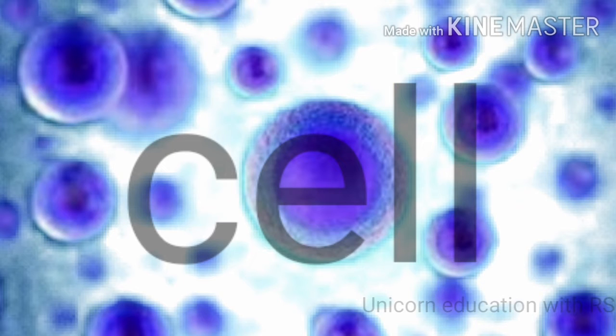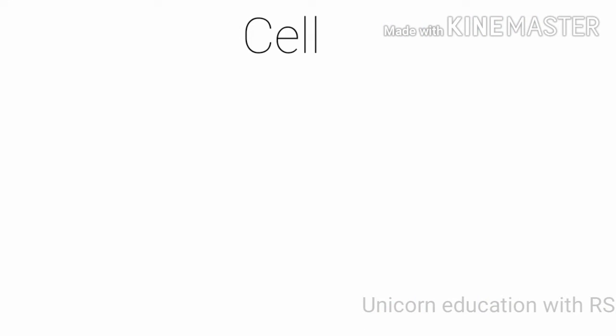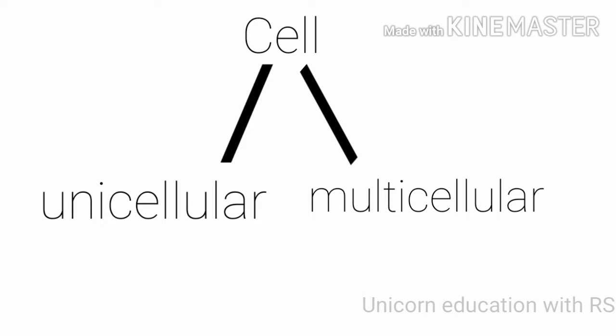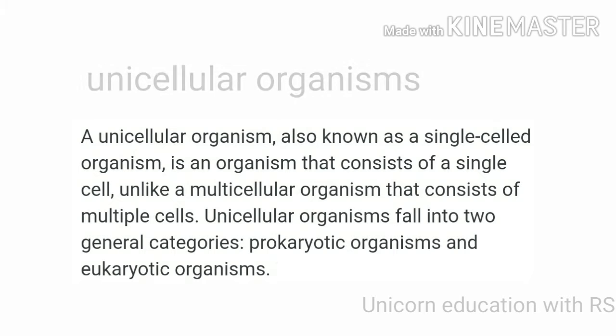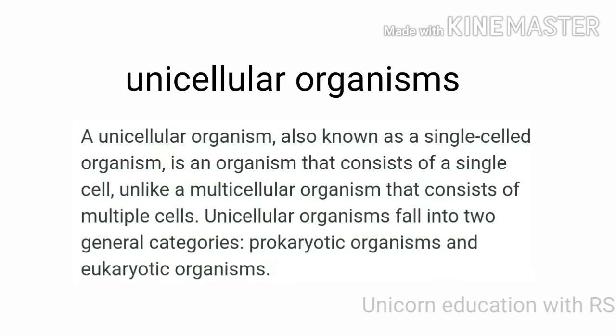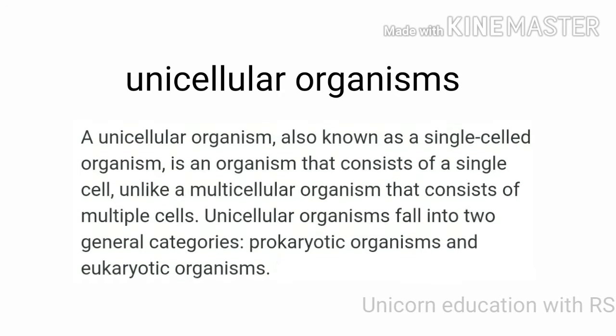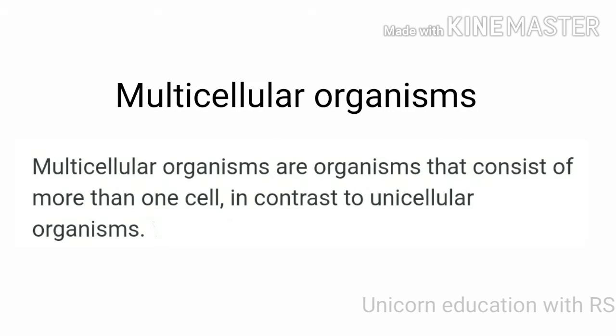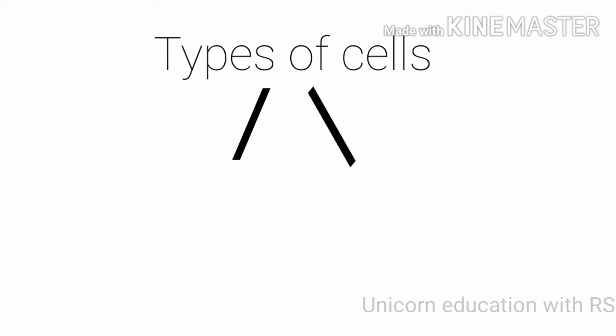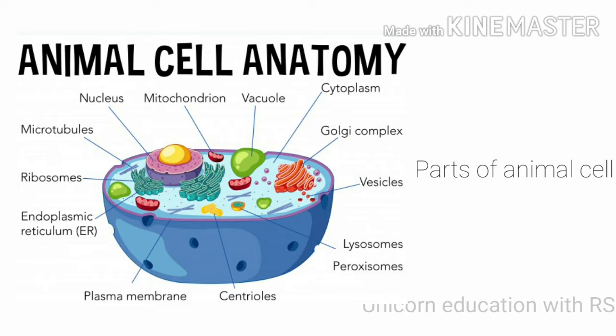Today we are going to learn about cells. A cell is divided into unicellular and multicellular. Unicellular organisms are also known as single-celled organisms. Multicellular organisms consist of more than one cell. The two types of cells are plant cell and animal cell. Today we are going to learn about animal cell first.